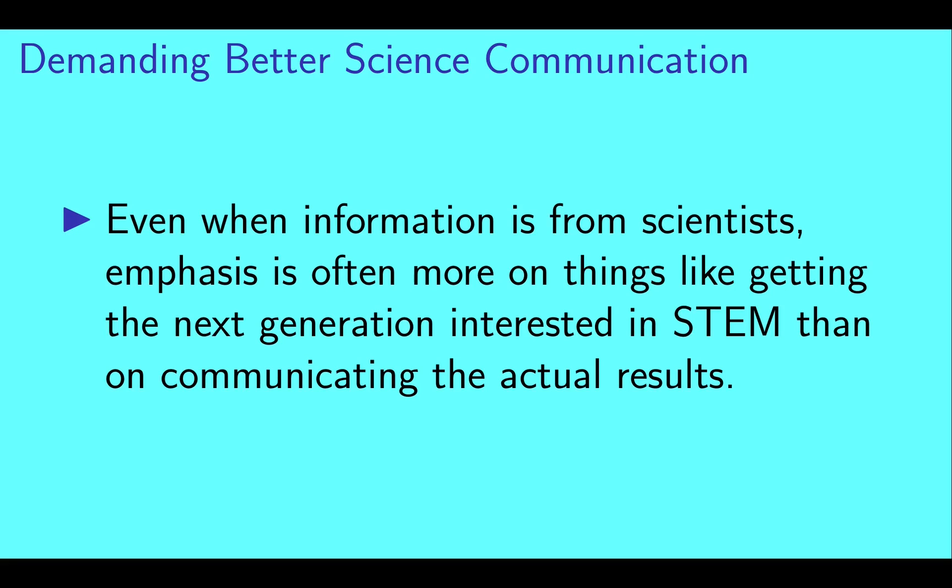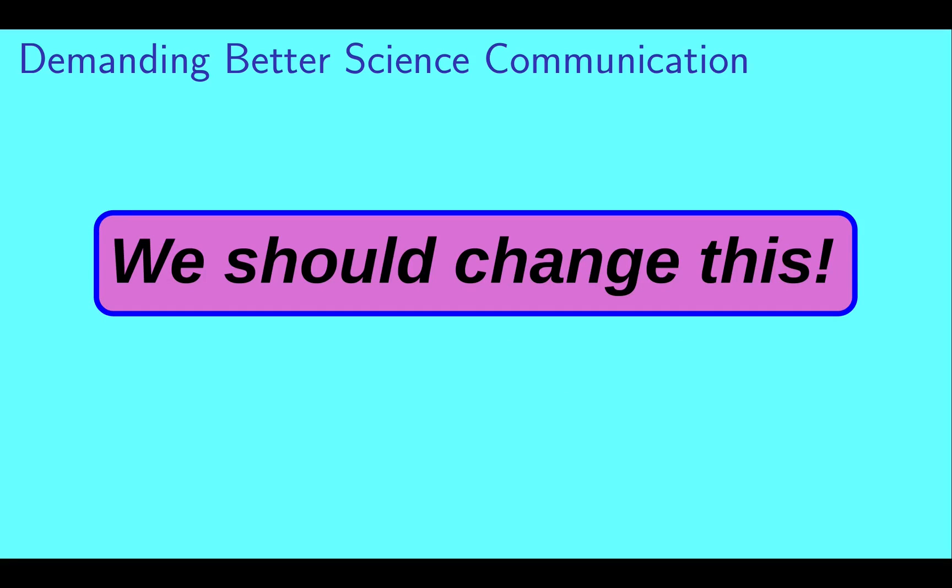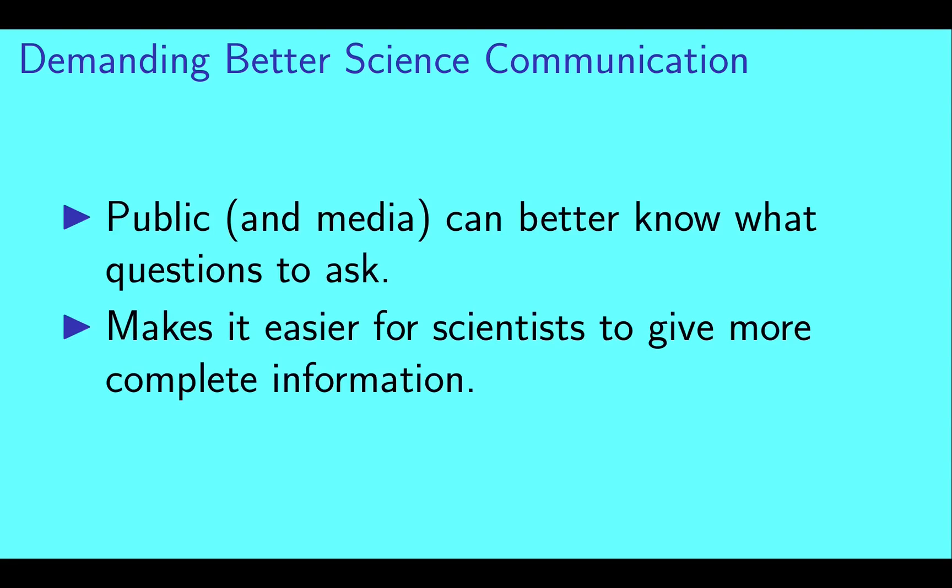Even when information is from scientists, the emphasis is often more on things like getting the next generation interested in STEM—that's science, technology, engineering, and math—than on communicating the actual scientific results. We should change this. With a better understanding of measurement uncertainties, the public and the media can better know what questions to ask. This also makes it easier for scientists to give more complete information.